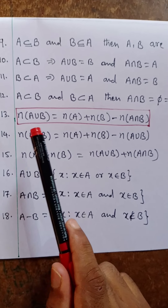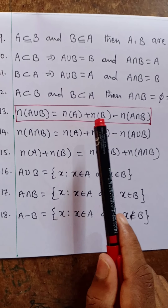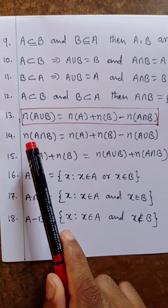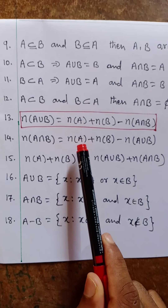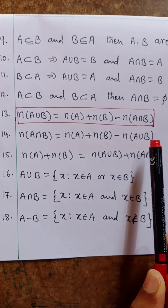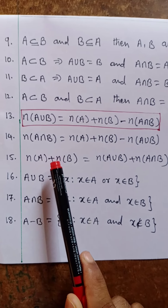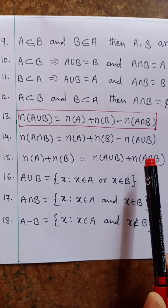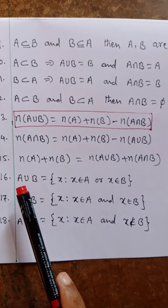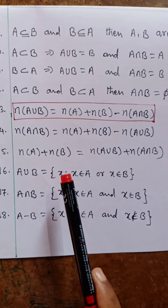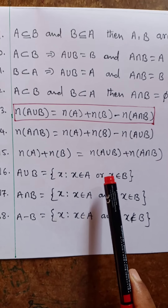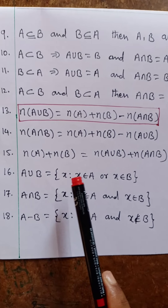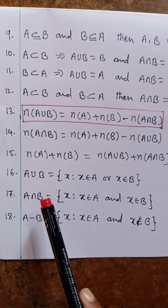Twelfth one: if A subset of B and B subset of A, then A intersection B equal to phi. Thirteenth one: n(A union B) equal to n(A) plus n(B) — this is the formula for cardinal number of union. Fifteenth one: n(A) plus n(B) equal to n(A union B) plus n(A intersection B). Sixteenth one: A union B equal to {x such that x belonging to A or x belonging to B} — this is set builder form of A union B.